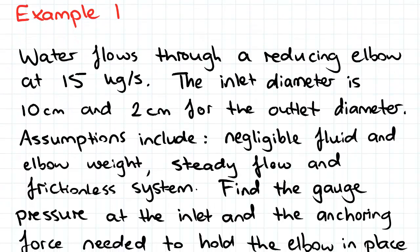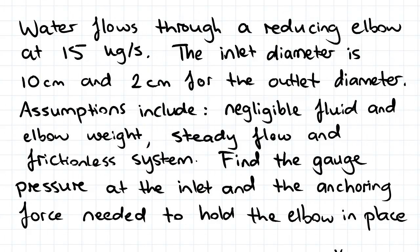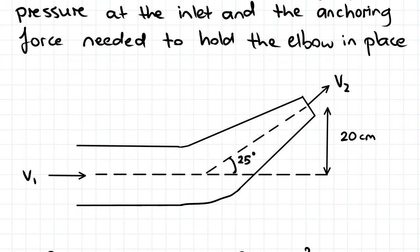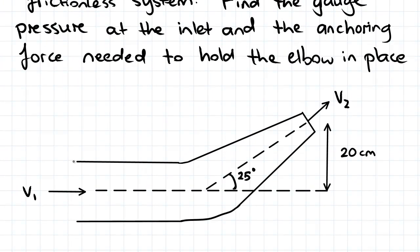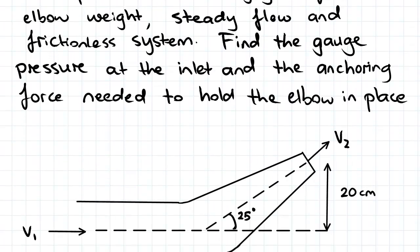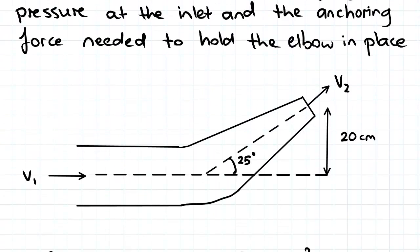So here's our example. Water flows through a reducing elbow at 15 kilograms per second. The inlet diameter is 10 centimeters and 2 centimeters for the outlet diameter. Might help to take a look at the diagram there. So inlet diameter was 10 centimeters, outlet diameter was 2.